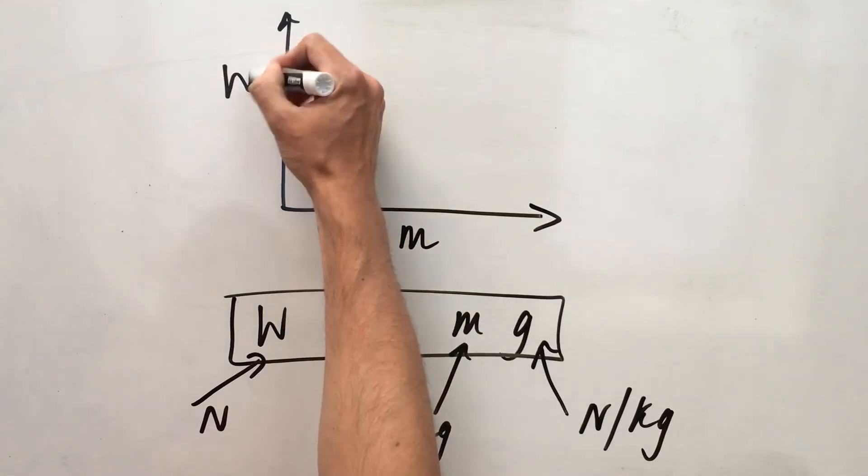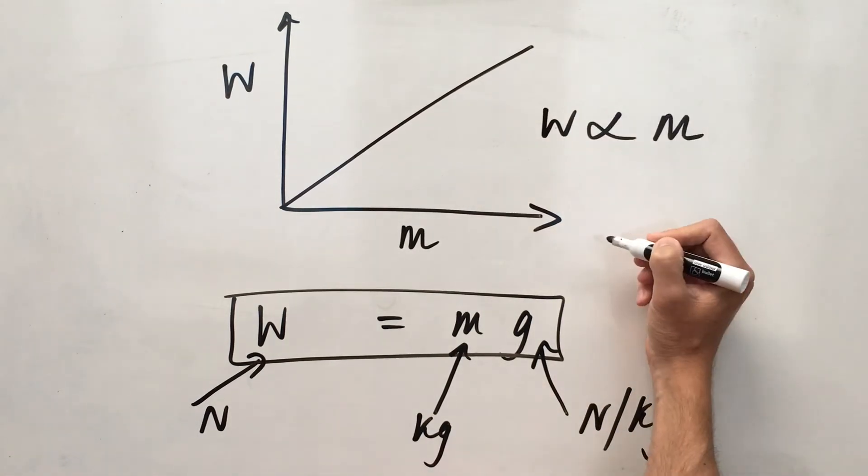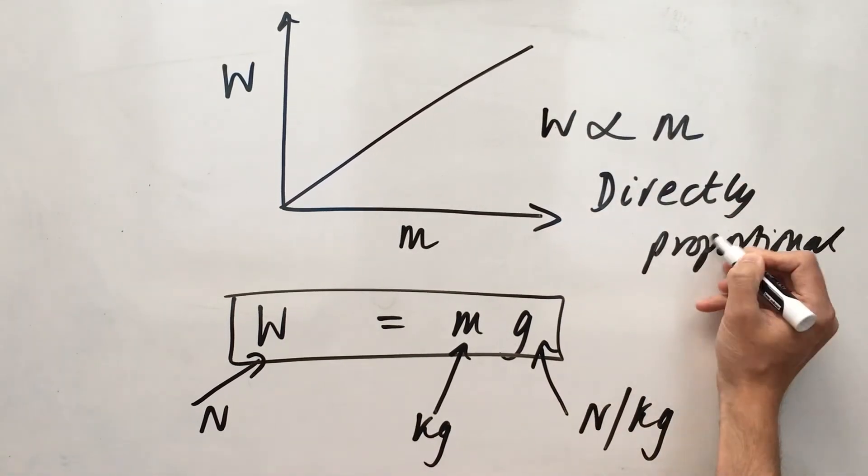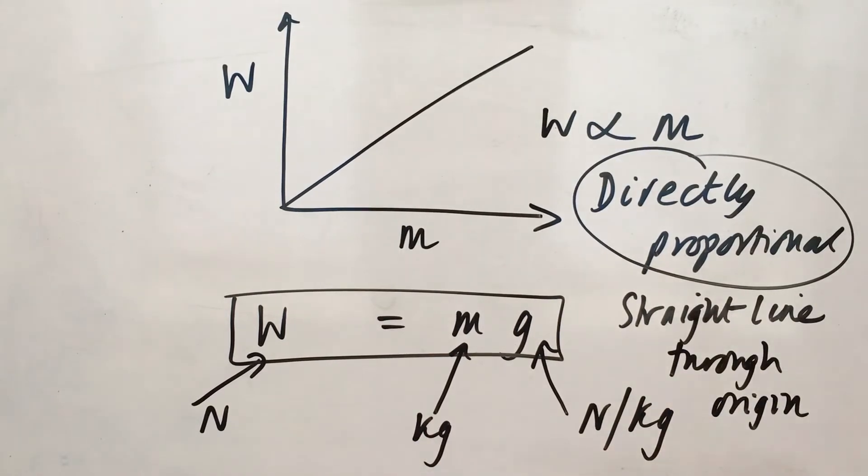But it also shows that weight and mass are directly proportional. So if we plot a graph of weight against mass, so weight on the y-axis, mass on the x-axis, we get a straight line through the origin. And a straight line through the origin says that those two quantities are directly proportional.